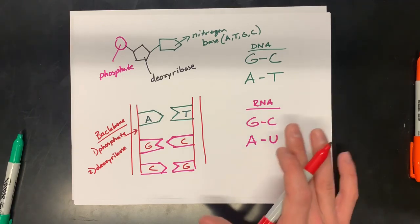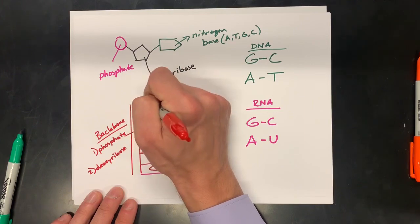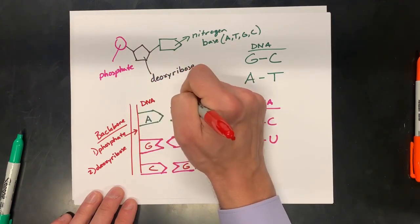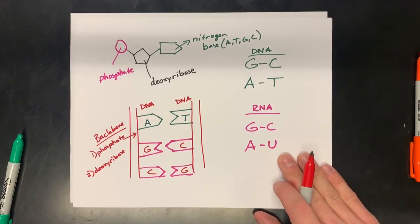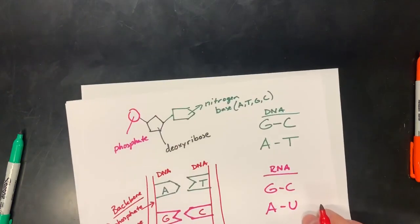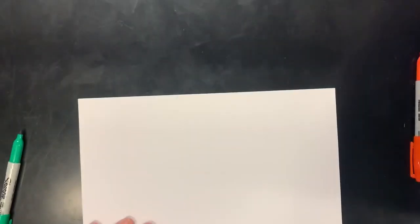That's pretty much all our base pairing rules are for DNA and our structure of our double helix. This is DNA going to DNA, and this process happens for DNA replication. Moving on from there.